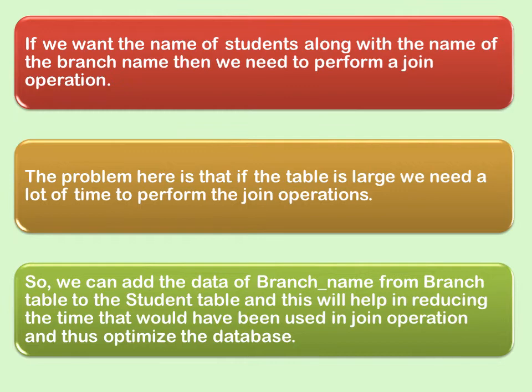So the performance will be low. For improving the performance, we do denormalization. We can add the branch name data from the branch table into the student table. This will help reduce the time that would have been used in a join operation, and thus optimize the database.